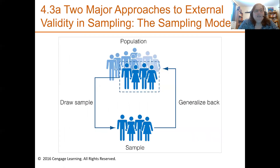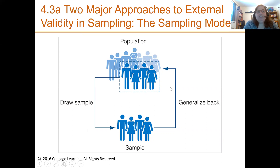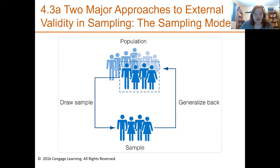There are two major approaches to external validity sampling. One is the sampling model, where we have our population, we draw our sample, and then we want to generalize back. But we can't necessarily generalize back to everyone — we generalize back to the population that makes sense based on how we drew the sample.